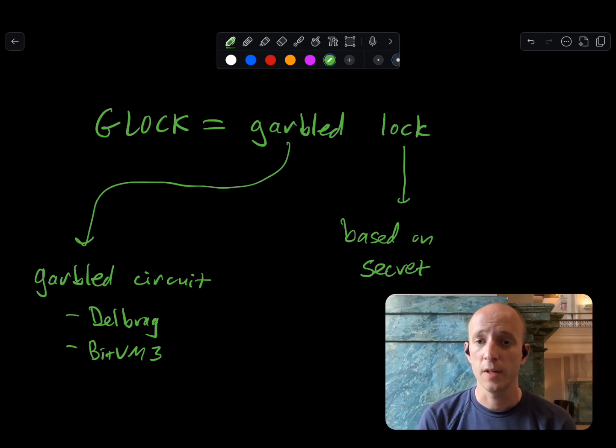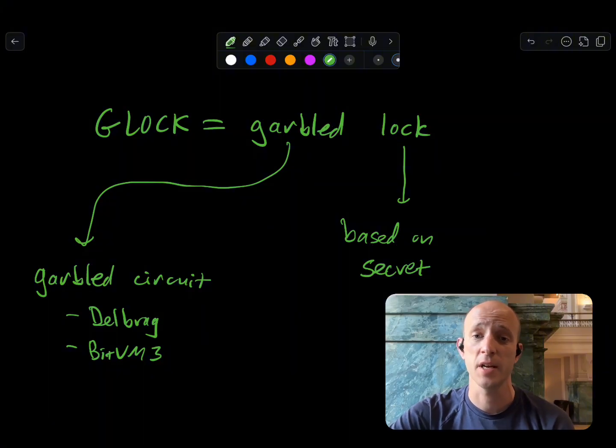We know about some kinds of locks in Bitcoin, like hash locks, that condition the release of a transaction on some kind of knowledge of a secret. Well, we don't use hash locks here. We use the secret that comes out of a garbled circuit to unlock our transactions. And this lock lets us deal with almost any computation we want on Bitcoin, something that until very recently could not be done.